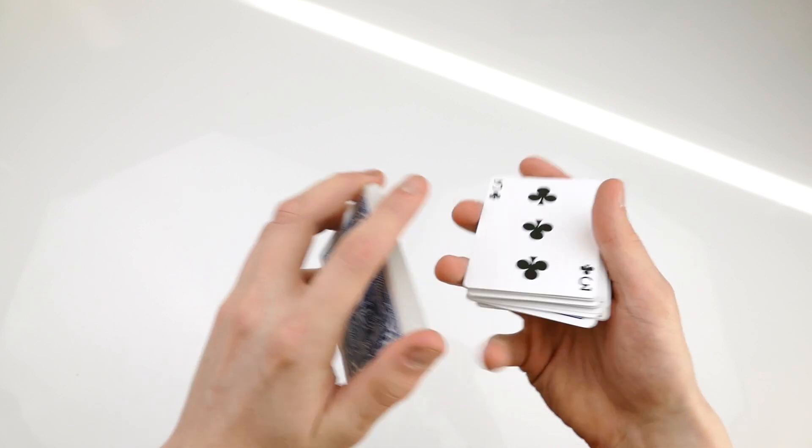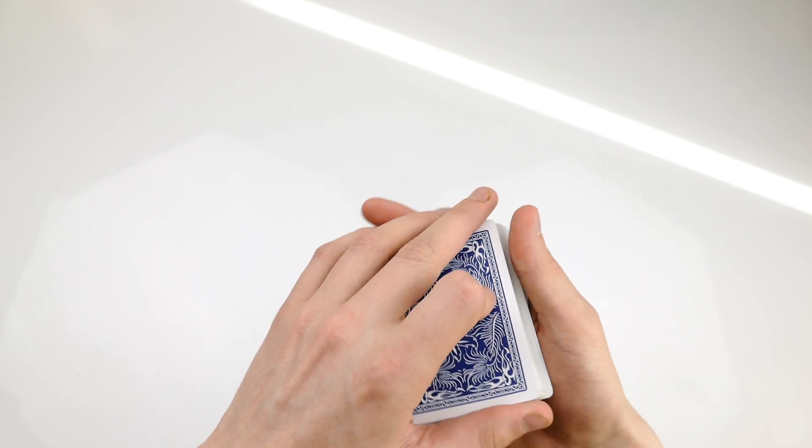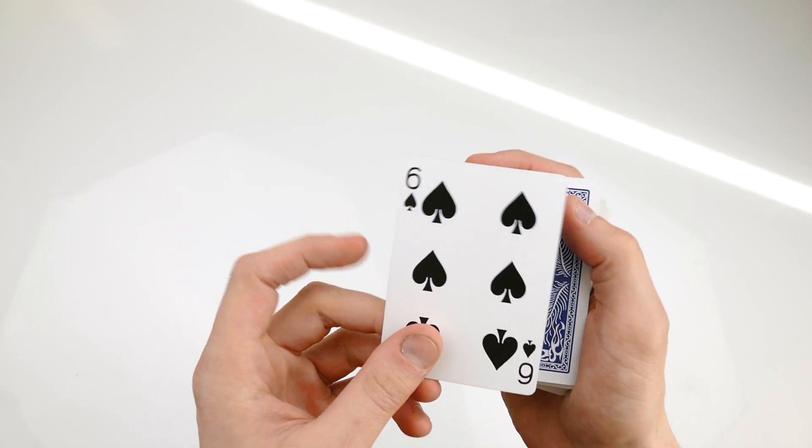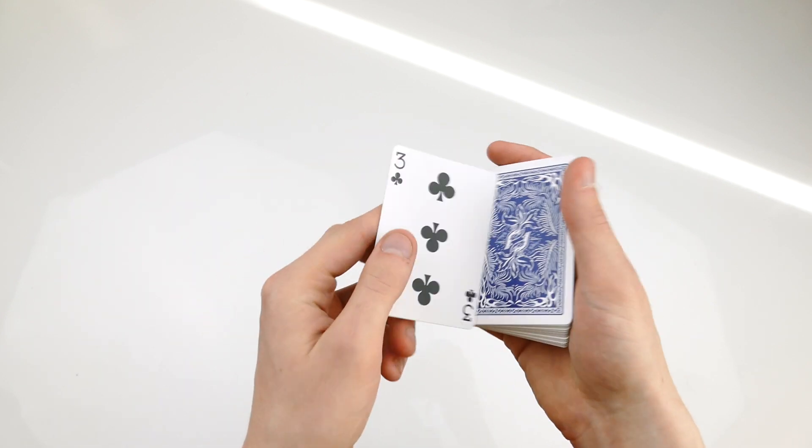Let me show you it once again. A card is selected, let's say the three of clubs for example, and then I'm going to be using the top card, the six of spades. If I shake it, it changes like that into the three of clubs.